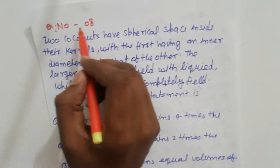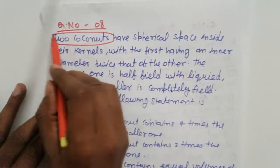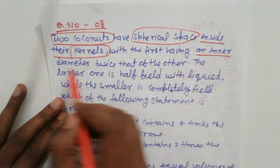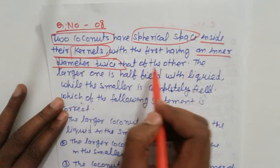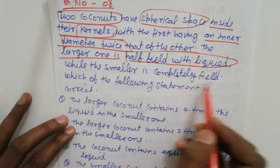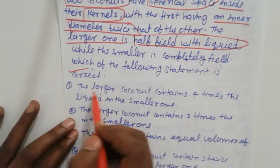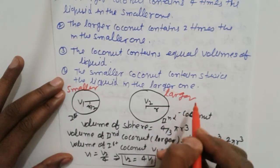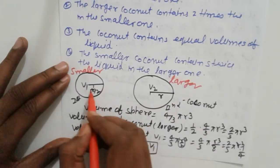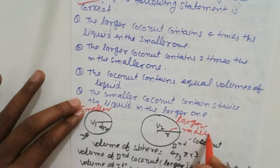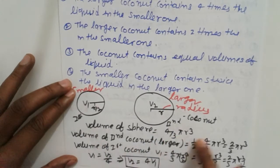Question 8: Two coconuts of spherical shape. The larger one has a diameter twice that of the smaller one. The larger is half filled with liquid and the smaller is completely filled. Suppose the radius of the smaller is r/2 and the larger is r.